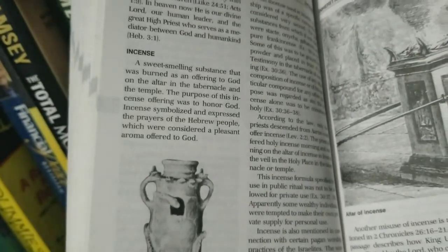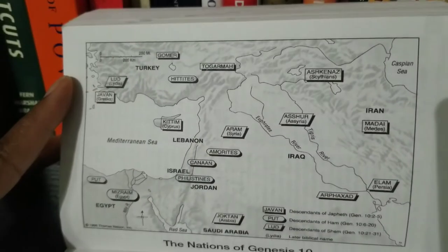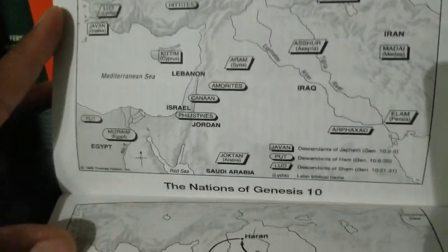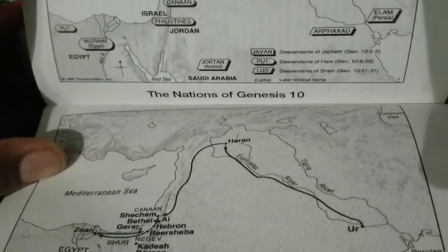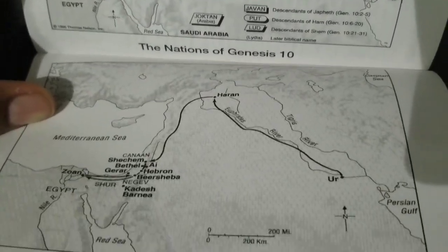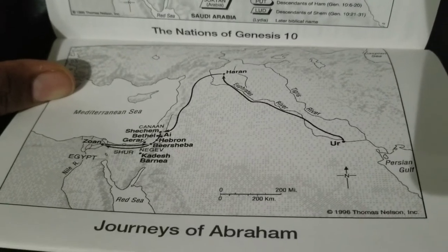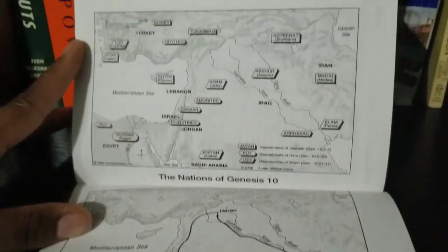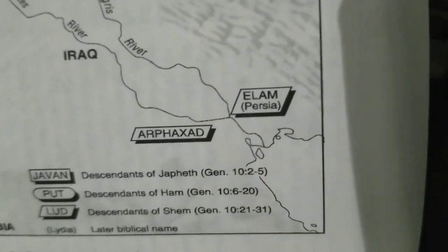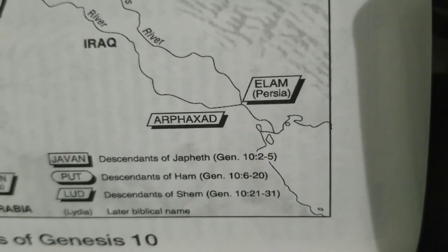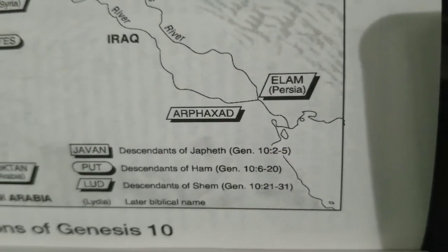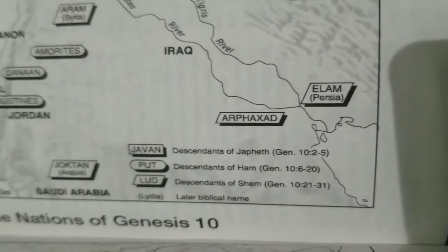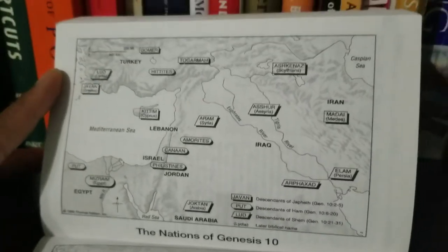There are two maps at the end of this dictionary, talking about the nations of Genesis and also the journeys of Abraham. I would consider that as a bonus, because after all this is just a Bible dictionary — a compact version of it — not to be confused with the Bible concordance.